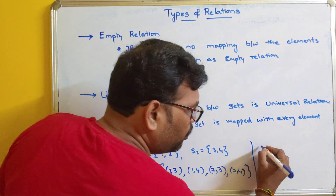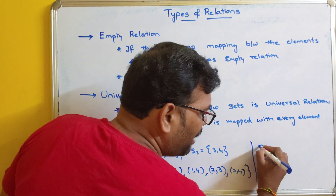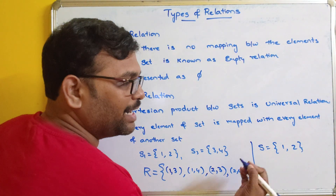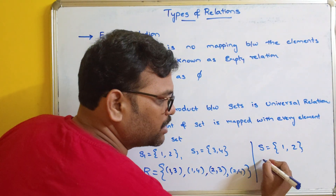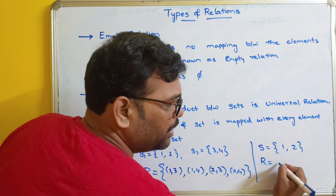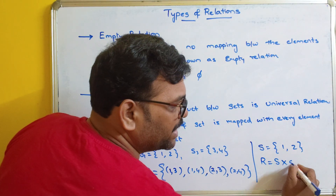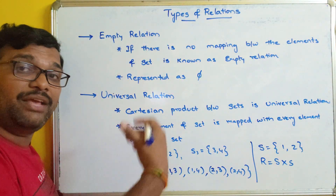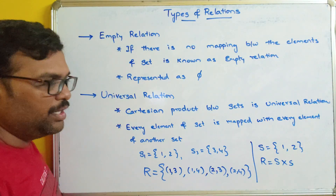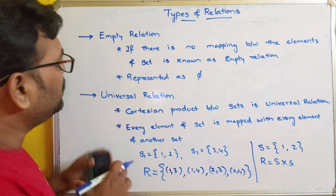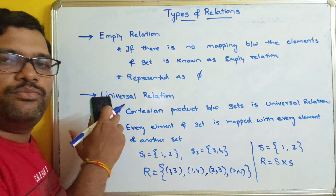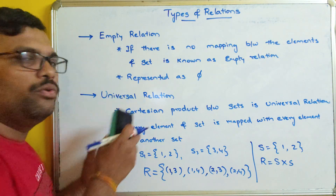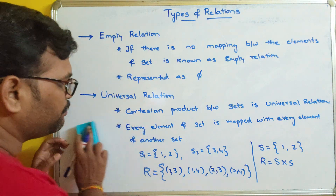For example, if S1 is {1, 2} and S2 is {3, 4}, then the universal relation R is the Cartesian product: {(1,3), (1,4), (2,3), (2,4)}. So every element of set 1 is mapped with every element of set 2. Simply put, it is the Cartesian product. Even if we have only one set, the universal relation will be S × S — every element of S mapped with every element of S.